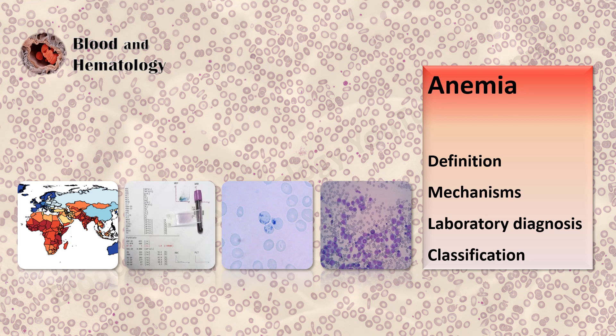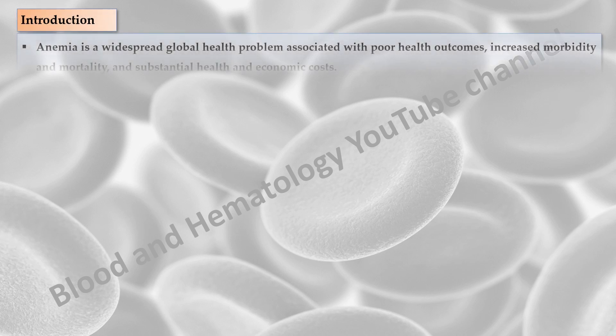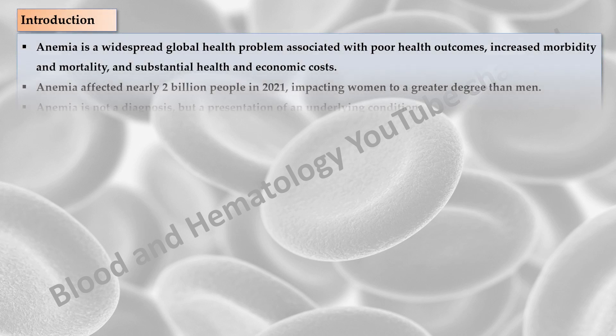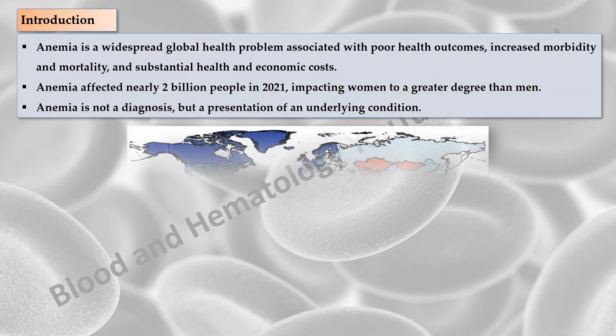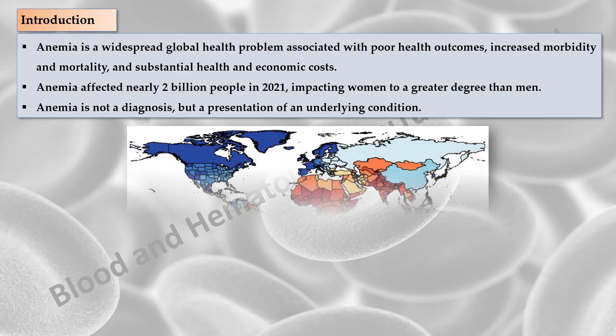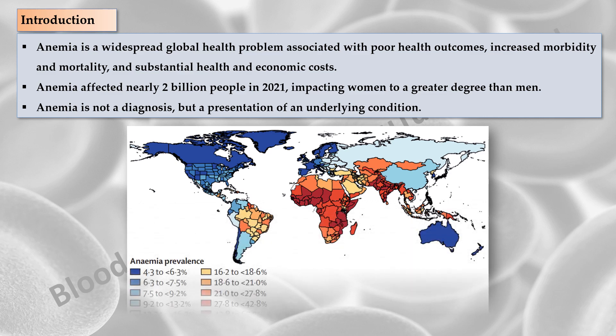Hello everyone and welcome to Blood and Hematology YouTube channel. This video is about definition, mechanisms, laboratory diagnosis and classification of anemia. Anemia is a widespread global health problem associated with poor health outcomes, increased morbidity and mortality, and substantial health and economic costs. Anemia affected nearly 2 billion people in 2021, impacting women to a greater degree than men. Anemia is not a diagnosis but a presentation of an underlying condition.